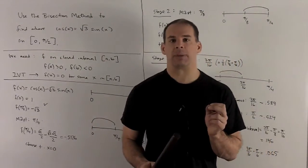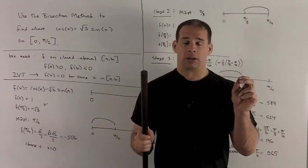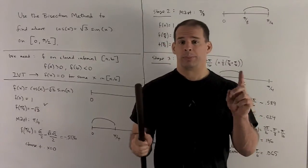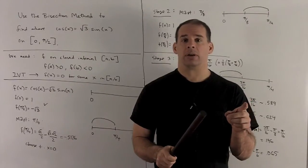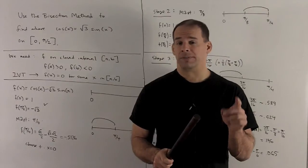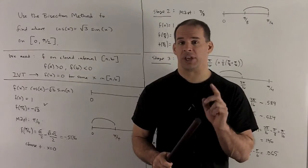For the bisection method, what do we do? We're going to have our interval on the endpoints that we're going to have opposite signs. We check the midpoint. For the midpoint, three things can happen. Your function can be zero at the midpoint, in which case you're done. You found your zero.